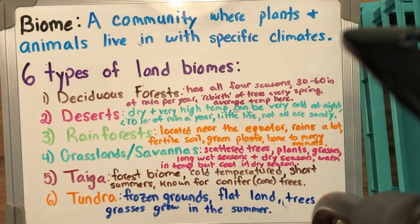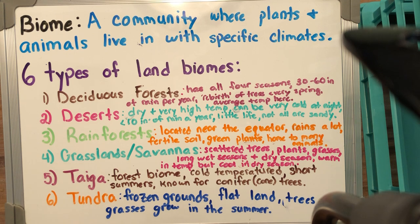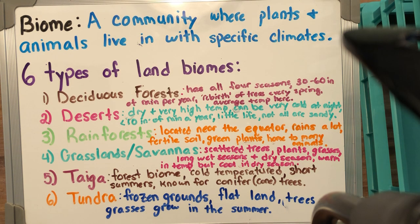Our next biome is a rainforest, which you are probably very familiar with. Rainforests are usually located near the equator — that invisible line that separates the Northern hemisphere from the Southern hemisphere. It's called a rainforest because it rains a lot, usually a couple times per day. Because of all that rain, the soil is fertile and really great to grow in, which is why all the plants are very vibrant green. It's also home to many unique species of animals, including sloths. The rainforests are very thick and deep, so there are probably animals and plants we haven't even discovered yet.